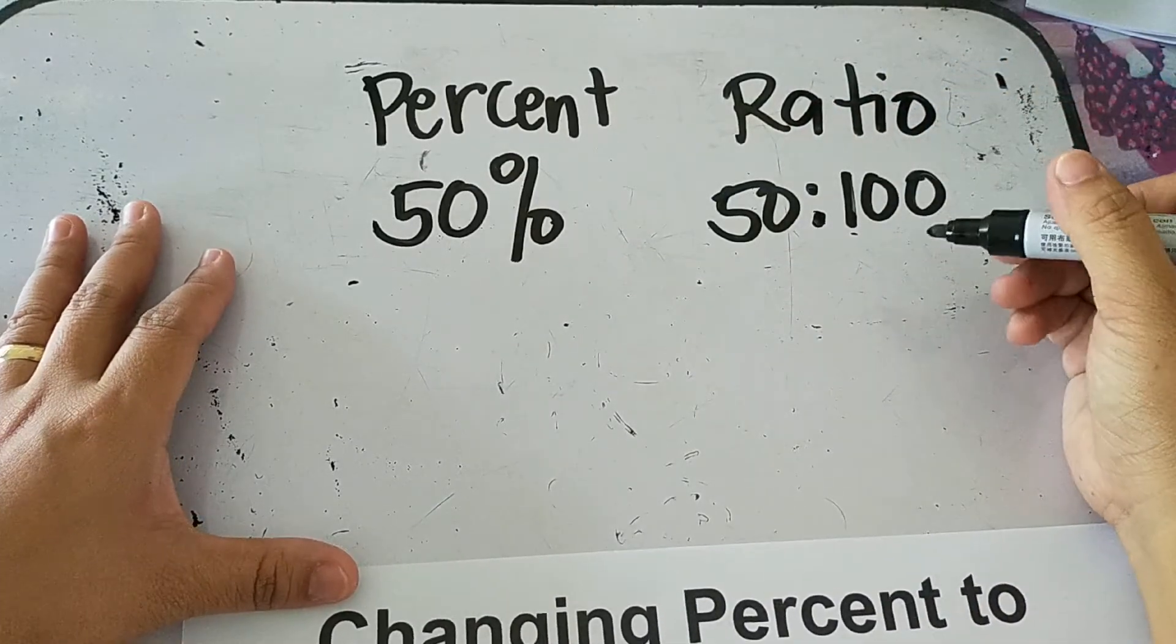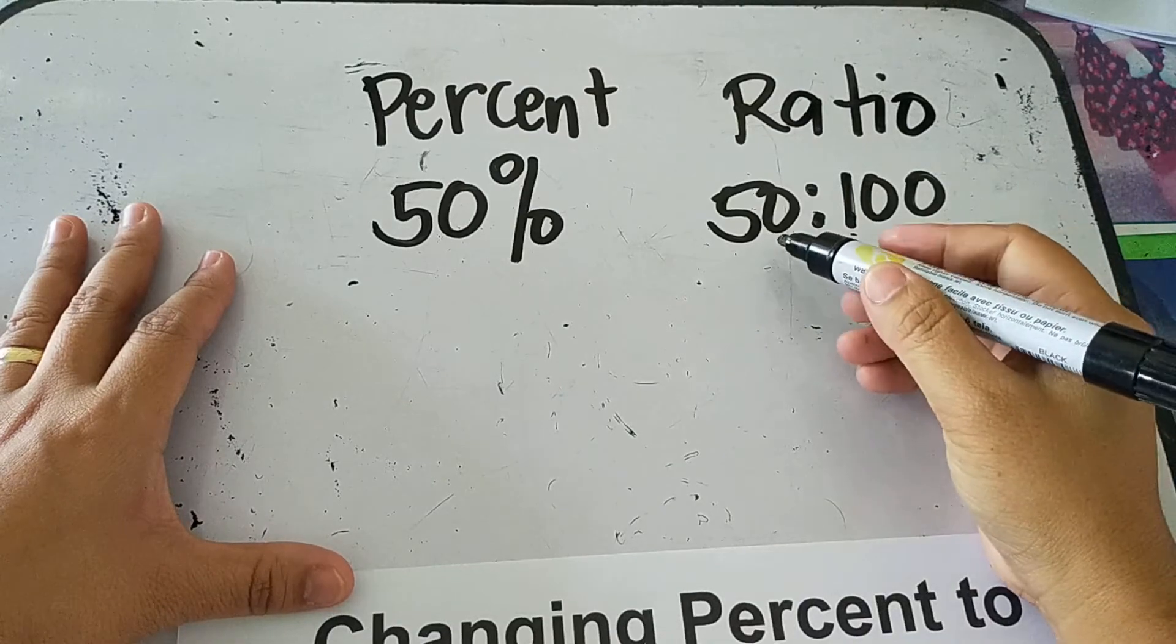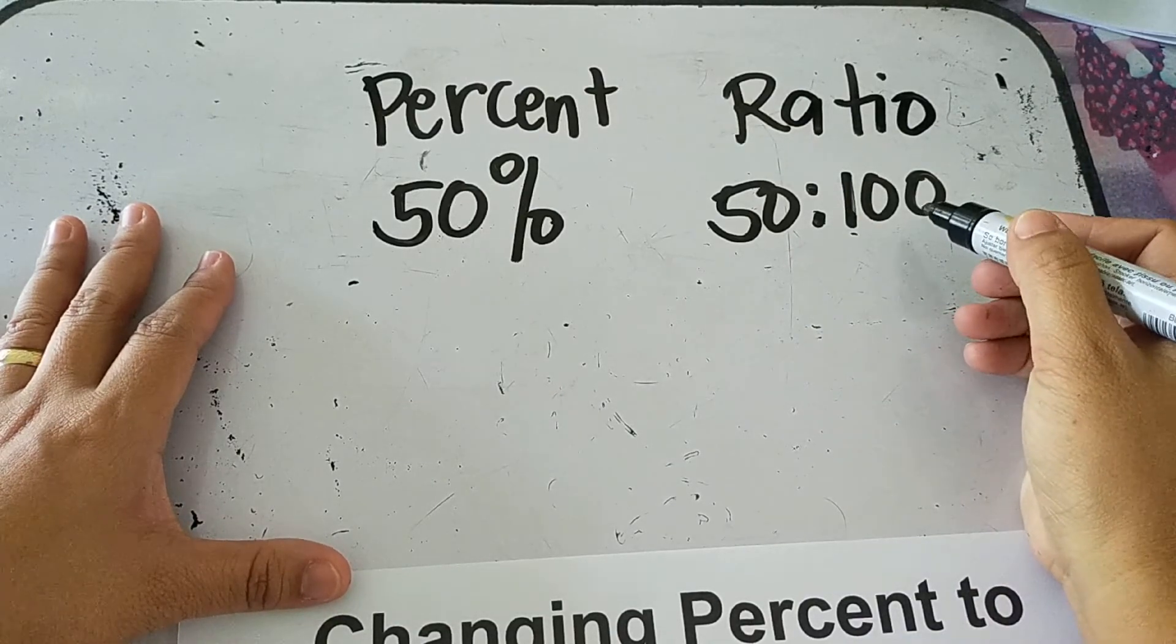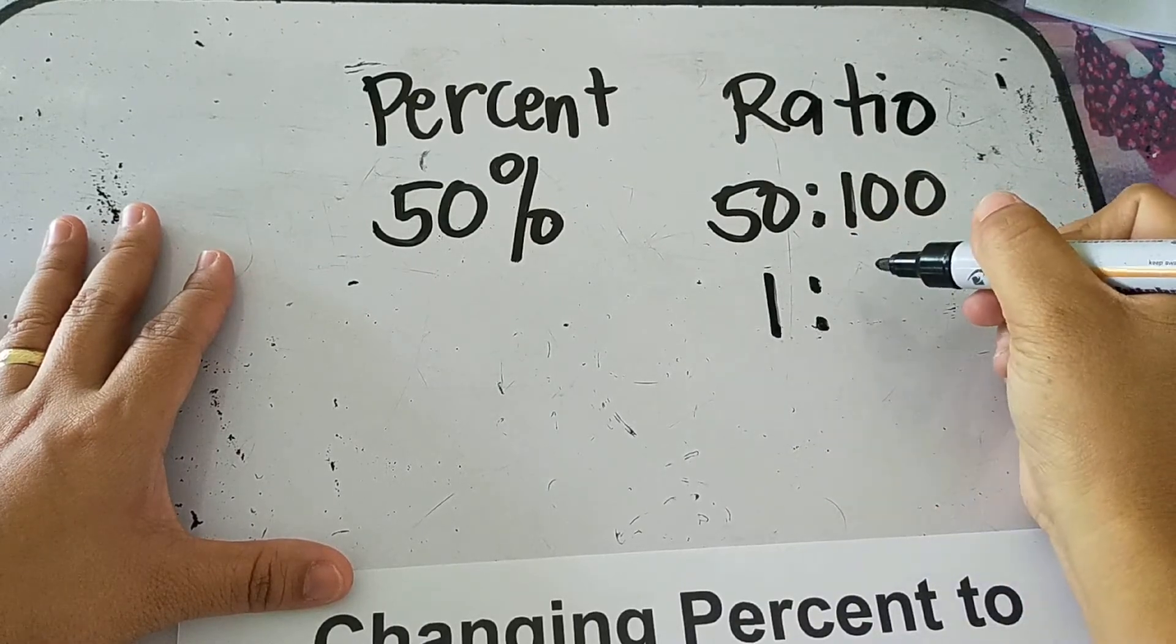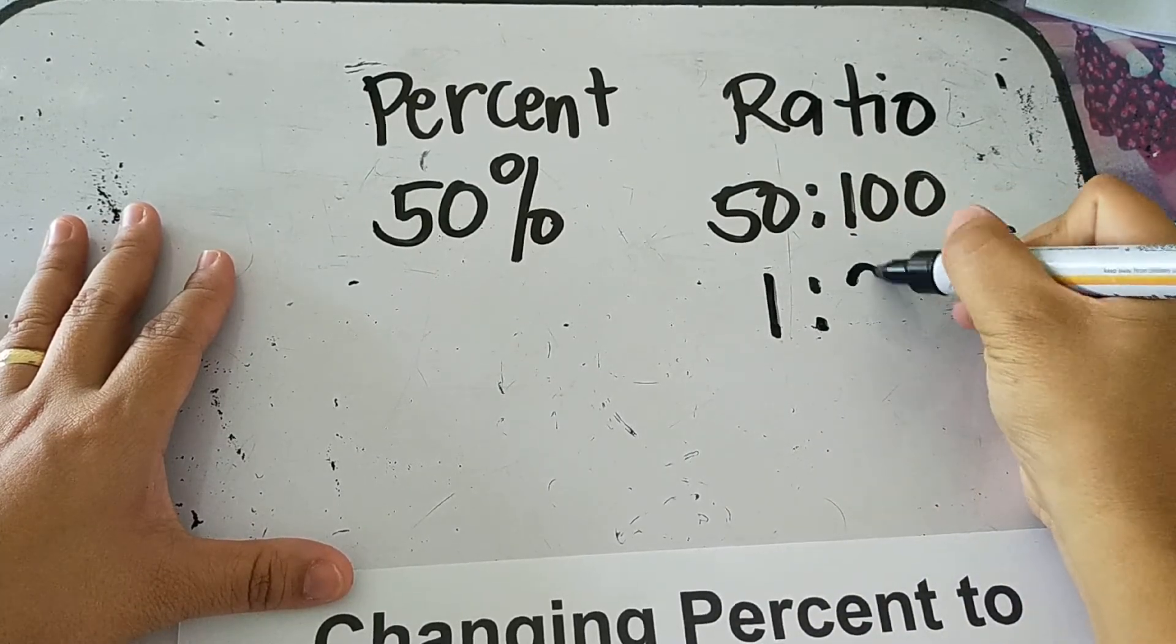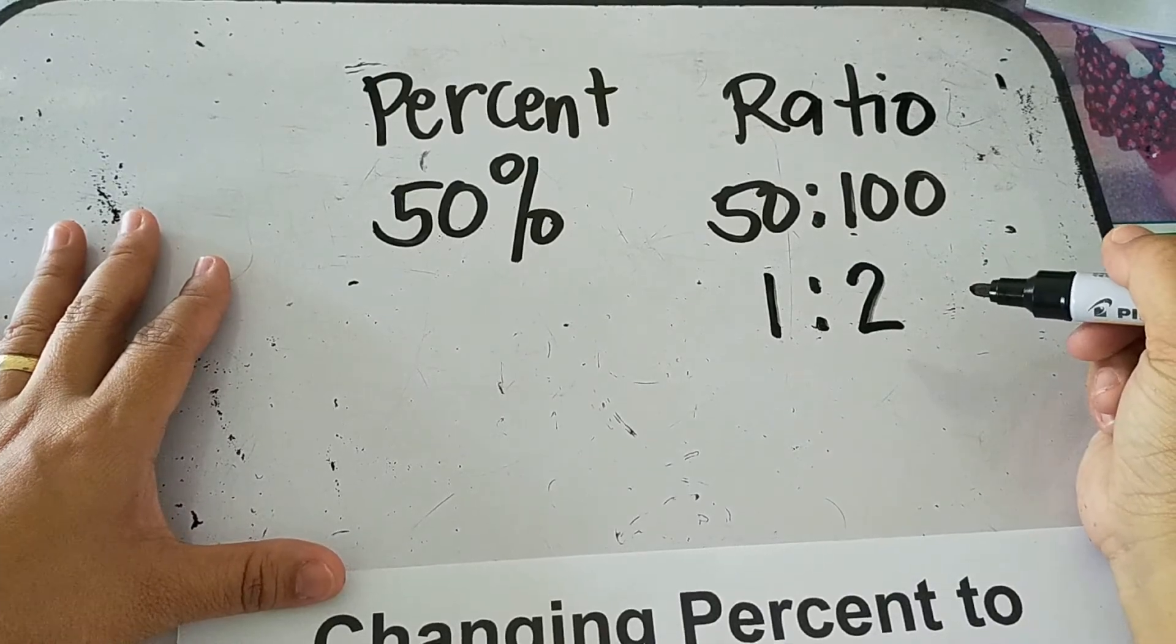It should be 50 is to 100. However, since we need to reduce to lowest term, what is the GCF of 50 and 100? It's 50. So 50 divided by 50 is 1. 100 divided by 50 is 2. Then the answer is 1 is to 2.